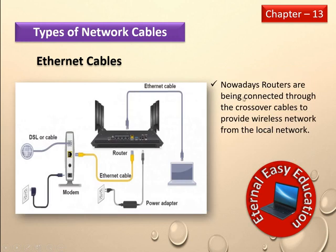Nowadays routers are connected through crossover cables. The router can be connected with a modem and many devices, and it provides a wireless network from a local area. If a computer lab or office has many computers, they use a common router device and share the internet connection among them. So in this video we have learned three things: USB cables, serial and parallel cables, and ethernet cables.